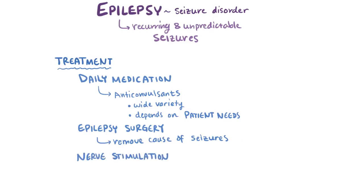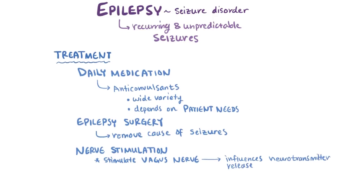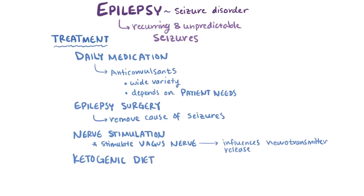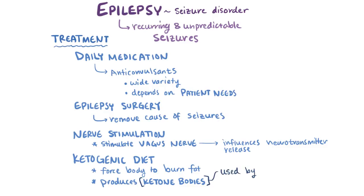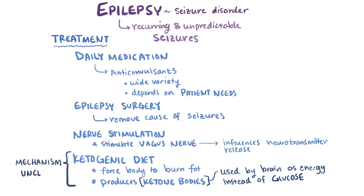Nerve stimulation might also be considered, where certain nerves like the vagus nerve are stimulated, which is thought to control seizures by influencing neurotransmitter release. Also, patients might adopt a ketogenic diet — a diet that forces the body to burn fat instead of carbohydrates — which produces ketone bodies used by the brain as an energy source instead of glucose. Although many hypotheses have been suggested for why this seems to reduce seizures, the exact mechanism isn't very well understood.